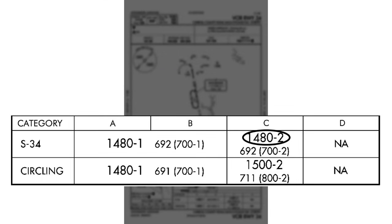In category C, the numbers change a little for the straight-in approach: we still have a minimum descent altitude of 1,480 feet MSL, but visibility requirements have gone from one mile to two miles. The rationale is that a faster aircraft requires better visibility to get visual sight of the runway and land. As we get faster, minimums tend to change. Column D shows that a much faster aircraft is NA — not allowed to do this approach. The numbers in parentheses like 700-1 relate to military operations and are not applicable to civil aircraft.